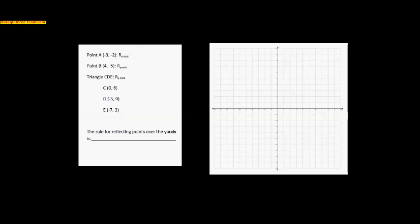Now we're reflecting over the y-axis. We want to come up with a rule that works every single time without having to graph it. Point A is at (negative 3, negative 2). I'm going to reflect over this vertical line and simply count: 1, 2, 3 to the y-axis, then 1, 2, 3 the other way. There is the reflection — the image. That is the point (positive 3, negative 2).